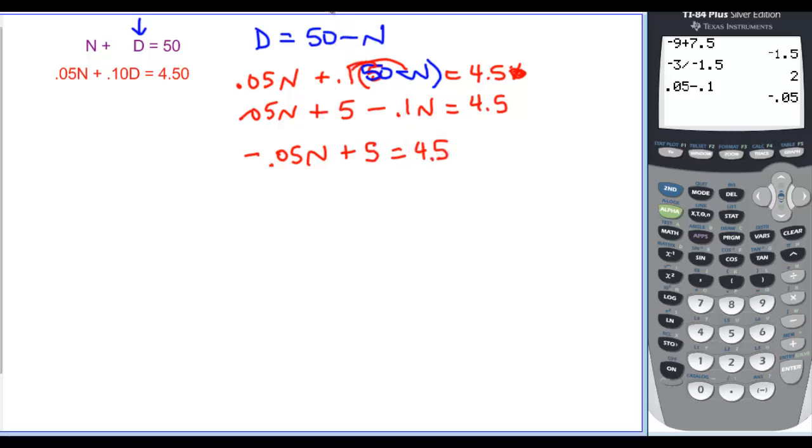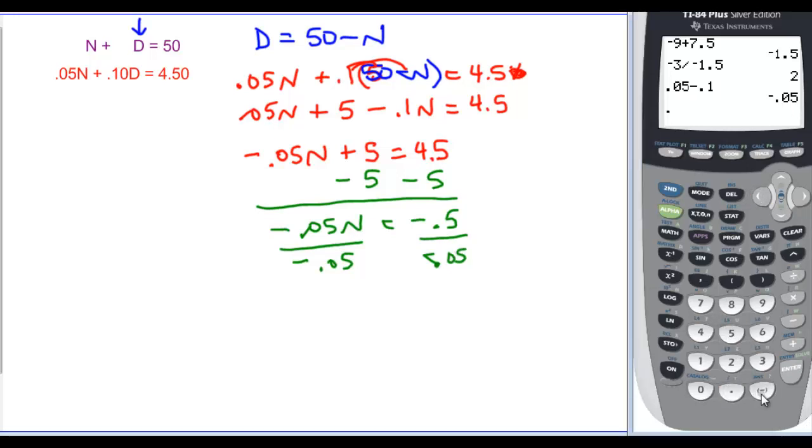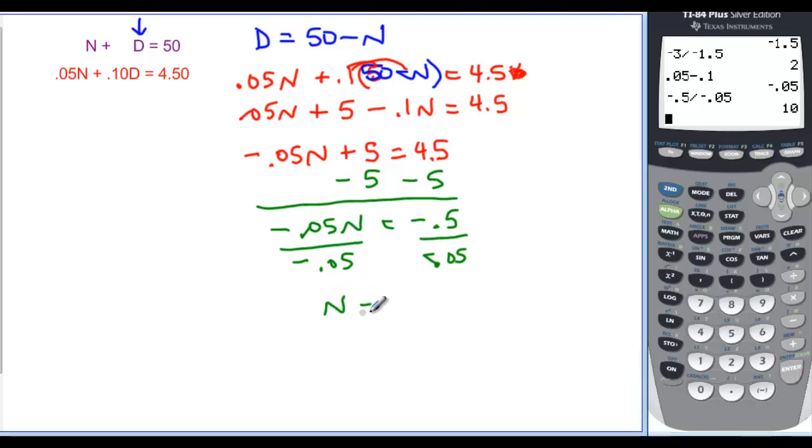I'm going to have .05 minus .1. We have negative .05n plus 5 is equal to 4.5. And if we subtract 5 from both sides, now we have negative .05n equal to negative .5. And if we divide by negative .05, and divide by negative .05, negative .5 divided by negative .05 gives us n being equal to 10. And remember that means 10 nickels.